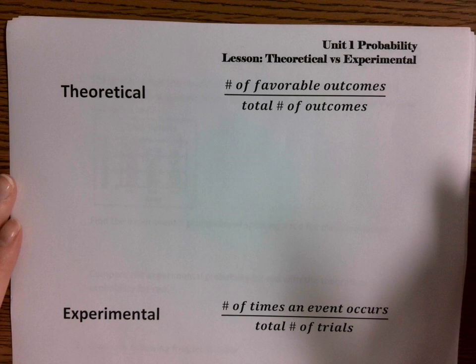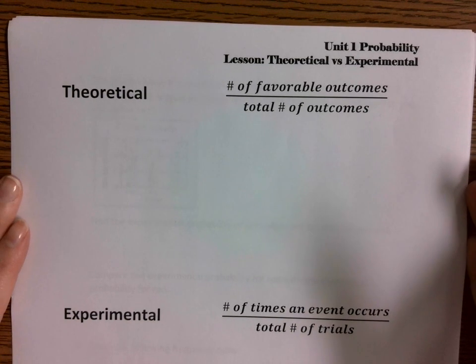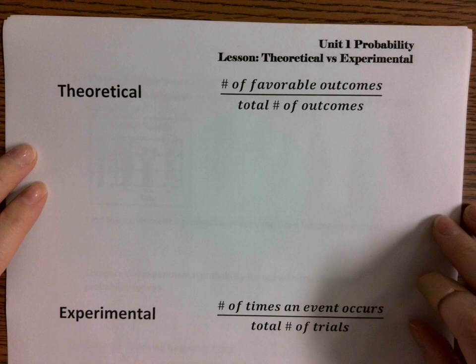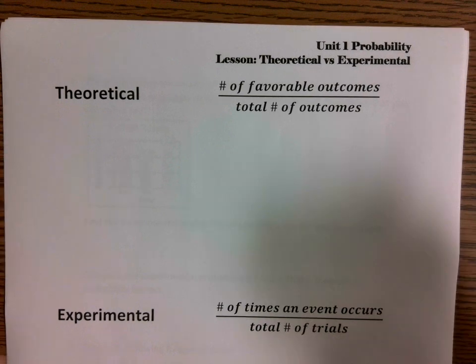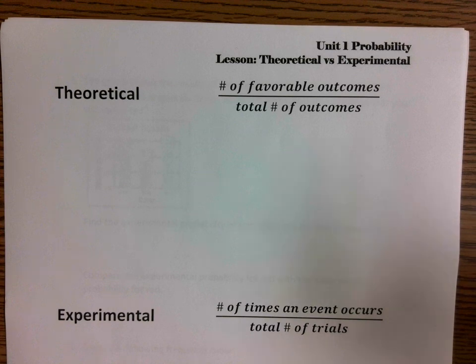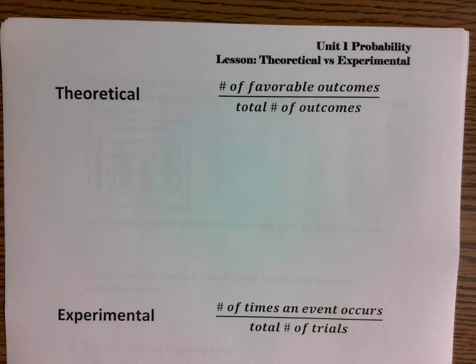What we're going to be discussing is the difference between two types of probability. So we discussed yesterday the concept of theoretical — you just didn't know that it was called theoretical. With theoretical probability, there is absolutely no action occurring.